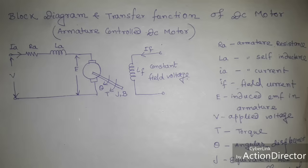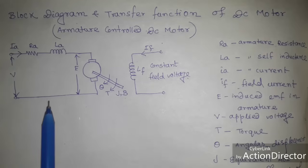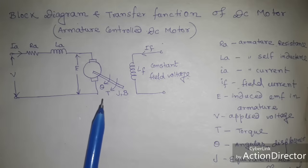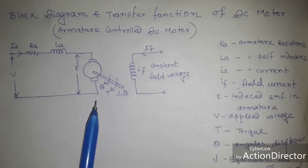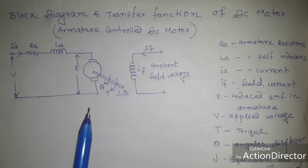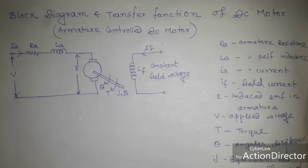In this video we will find the block diagram and transfer function of an armature controlled DC motor. This is the basic circuit diagram. We assume that the demagnetizing effect of armature reaction is neglected, and the armature circuit is assumed linear. Since this is an armature controlled DC motor, the field voltage is constant, so the field current is also constant.